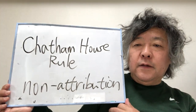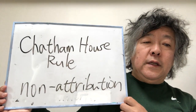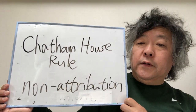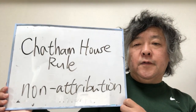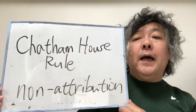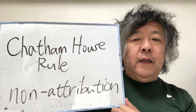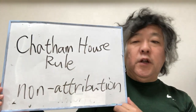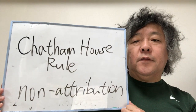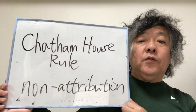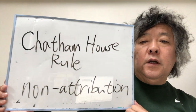You discuss things about foreign policy in Chatham House, and you can quote that discussion and get inspired from it. You can get ideas from the discussion and use those ideas and information in your business and in your policymaking when you go outside Chatham House. But you cannot attribute a particular piece of information or idea to a specific participant.